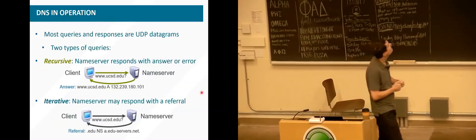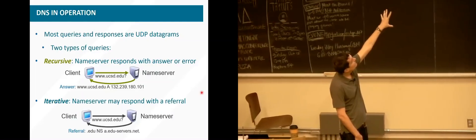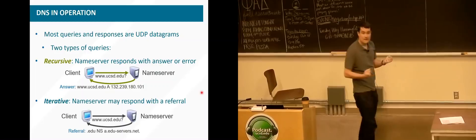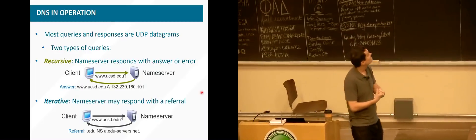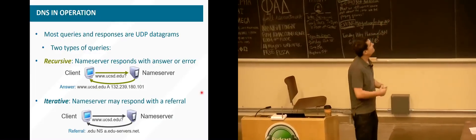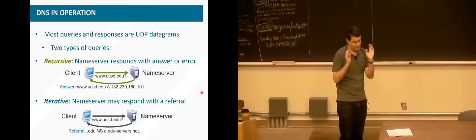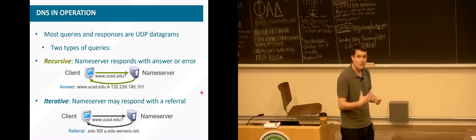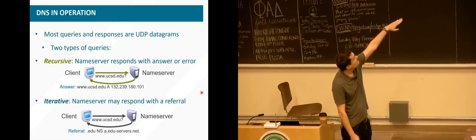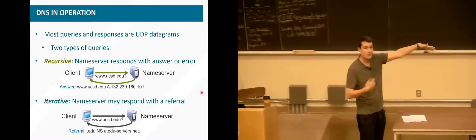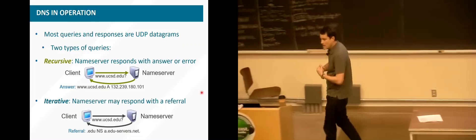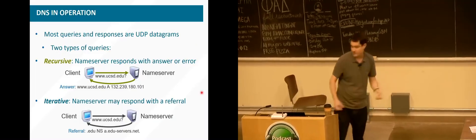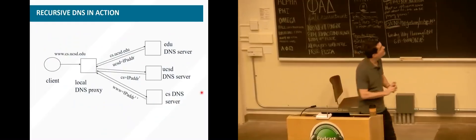DNS uses UDP — a very lightweight protocol that lives right on top of IP. There are two ways of interacting with DNS servers: a recursive way and an iterative way. In the recursive model, the client connects to a name server and says it's looking for, say, www.cs.ucsd.edu. That name server either has the mapping in its cache, or goes off and traverses the hierarchical structure to get the answer and returns it to the client. In the iterative approach, the name server can say 'I don't know the answer, but here's someone who might.'